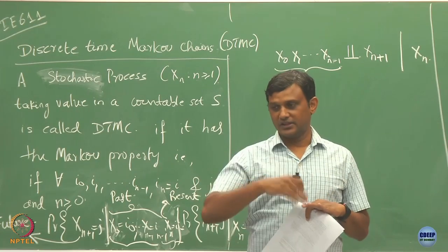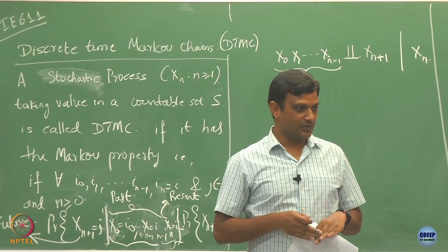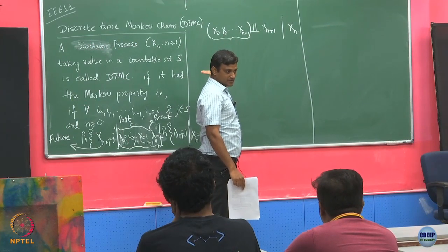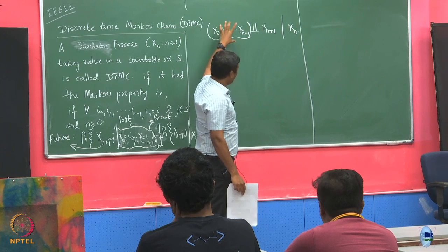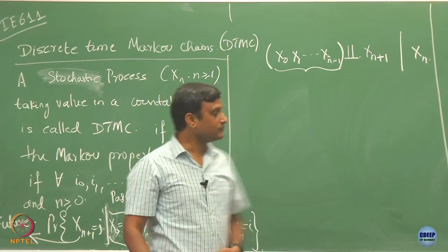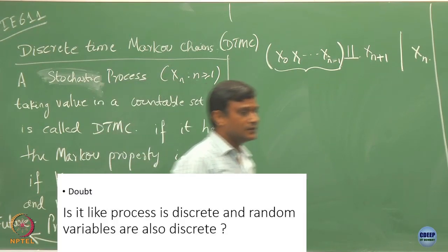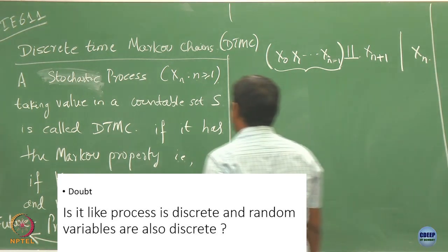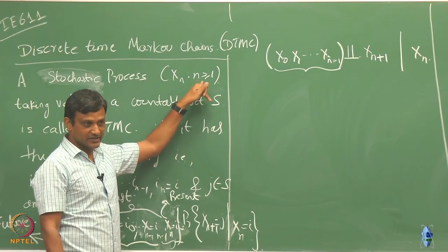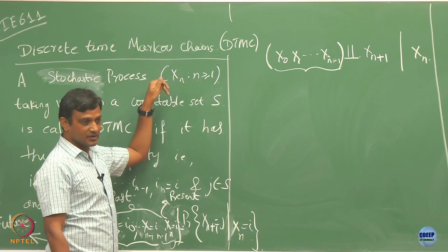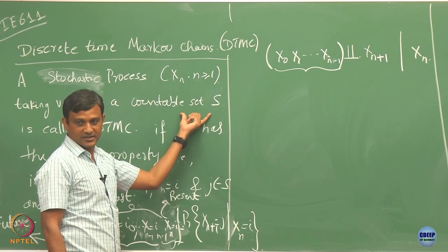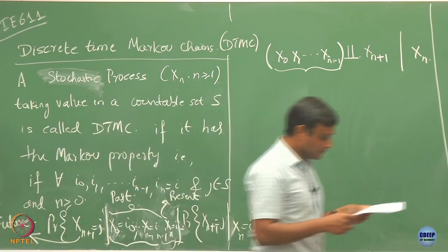The entire past is independent of the future given the current state. The process is discrete because we index with discrete time, and the process is discrete-valued because it takes values in a countable set.